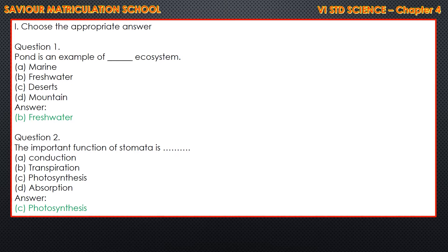First question: Pond is an example of a DASH ecosystem. The four options are A. Marine, B. Freshwater, C. Desert, and D. Mountain. The answer is B. Freshwater.